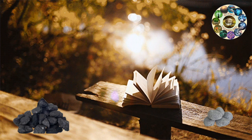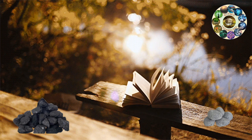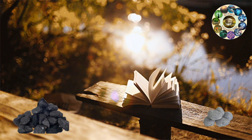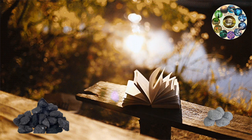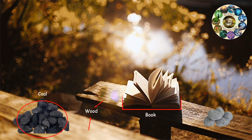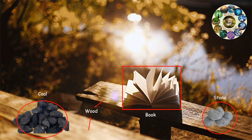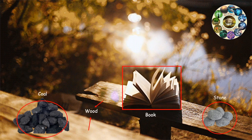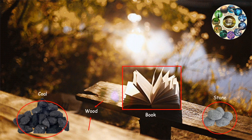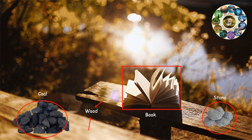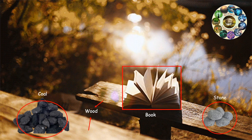There are several objects in our daily life that are capable of absorbing light. Opaque objects such as wood, coal, book, and stone do not transmit light and form perfect examples of objects capable of absorbing light radiations.